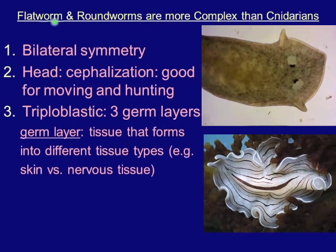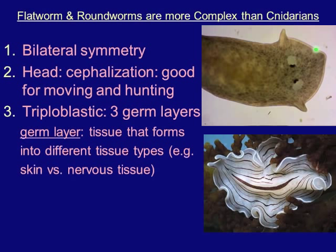Flatworms and roundworms are more complex than sea jellies and other cnidarians because: 1. They have bilateral symmetry — we can split them into left and right halves. 2. They have a defined head, which we call cephalization — good for moving and hunting, as a sensory part guides the rest of the organism. 3. They're triploblastic — they have three germ layers, with tissue forming into different tissue types such as skin versus nervous tissue.